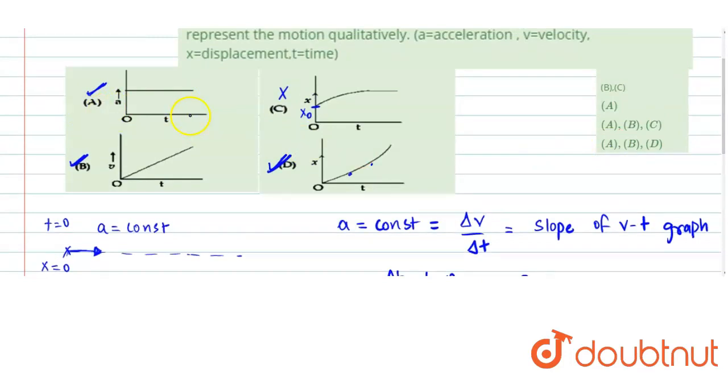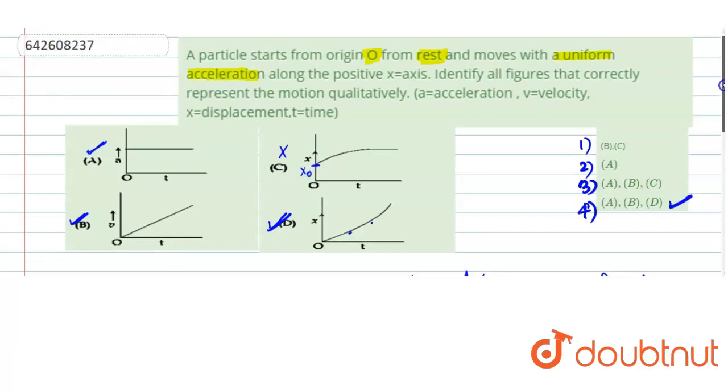So that means the correct graphs are A, B and D, which is given to us in option 4. I hope this helps you with the answer. Thank you.